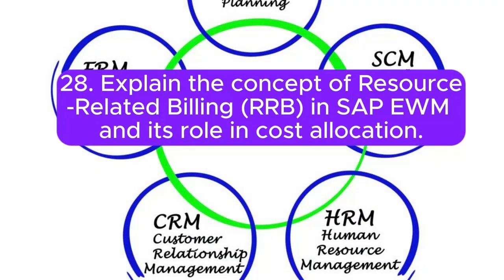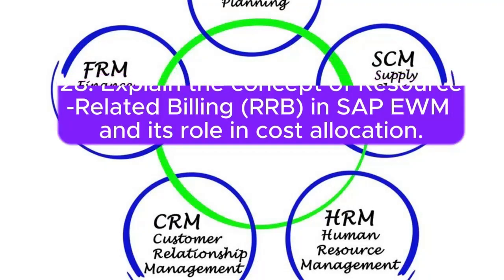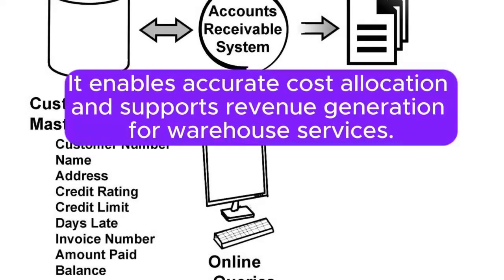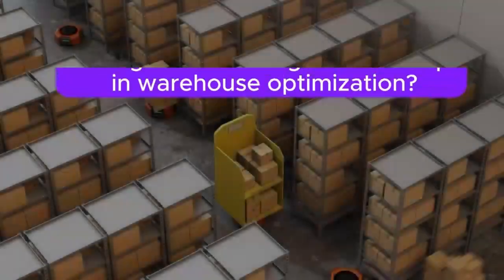Question 28: Explain the concept of resource-related billing (RRB) in SAP EWM and its role in cost allocation. Resource-related billing in SAP EWM involves billing customers based on the resources consumed during warehouse activities. It enables accurate cost allocation and supports revenue generation for warehouse services.